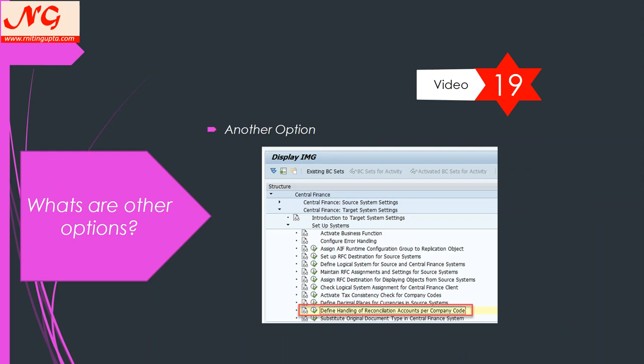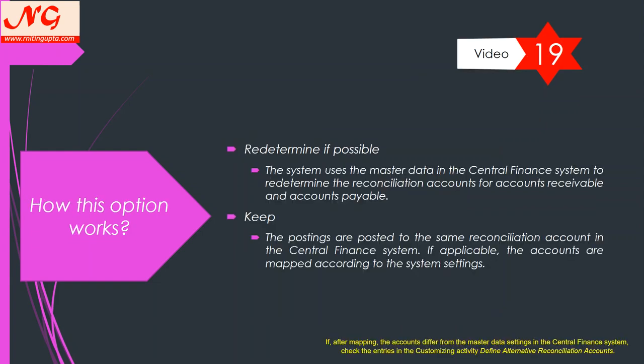There is another option — the latest one, which came approximately a year ago — called 'Define Handling of Reconciliation Account per Company Code.' This is a configuration in the CFIN IMG. When you click it, you have two options: 'Redetermine if possible' and 'Keep.' This only works for AR and AP. With 'Redetermine,' the system uses the master data in the Central Finance system to redetermine the reconciliation account of AR and AP based on CFIN configuration. With 'Keep,' postings are posted to the same reconciliation account in the Central Finance system as mapped according to system settings.